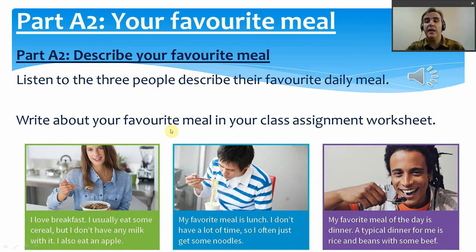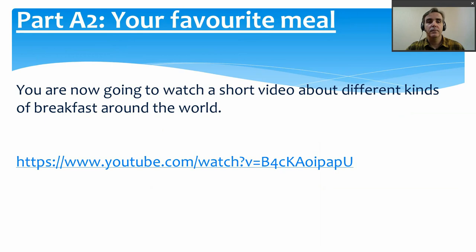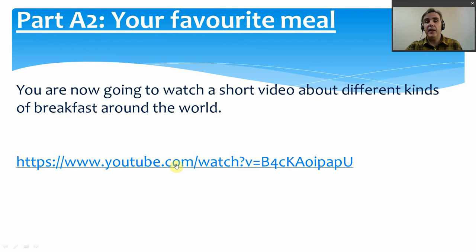One of the meals was breakfast, so let's take a little break and watch a short video about different kinds of breakfasts around the world. A lot of different countries have different things — in the UK, people usually eat some meat and eggs; in Korea, people might have rice, soup, or maybe some toast or cereal. Each country is a little bit different. Let's watch the video.